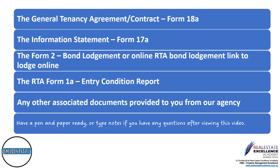You should have the following documents in front of you: the Form 18A, the General Tenancy Agreement Contract, the RTA Form 17A, and the Information Statement. Bond information will be provided to you from our agency, including RTA lodgement links to lodge your bond online direct to the RTA, or the Form 2 bond lodgement.